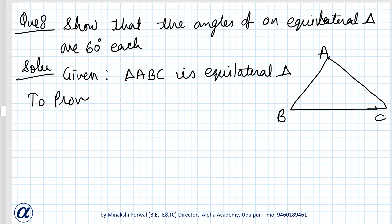To prove: angle A equals angle B equals angle C equals 60 degrees. Proof.